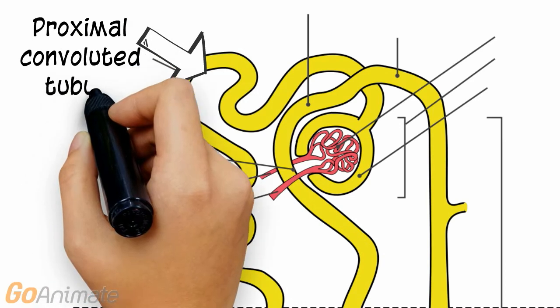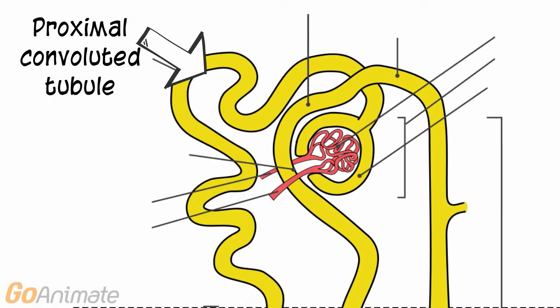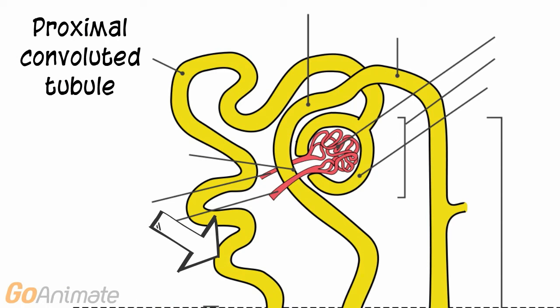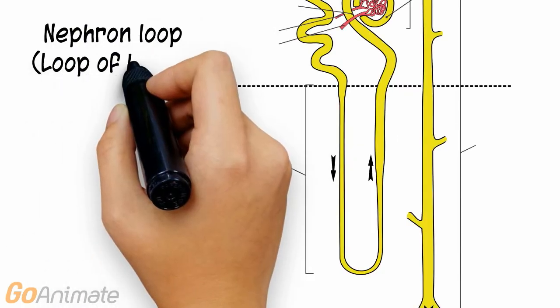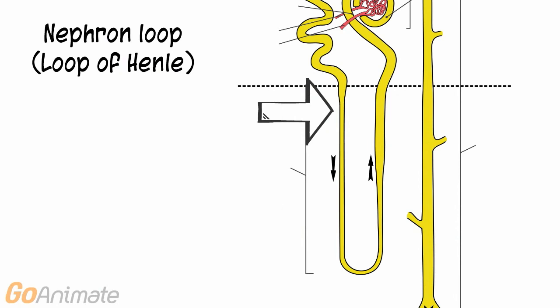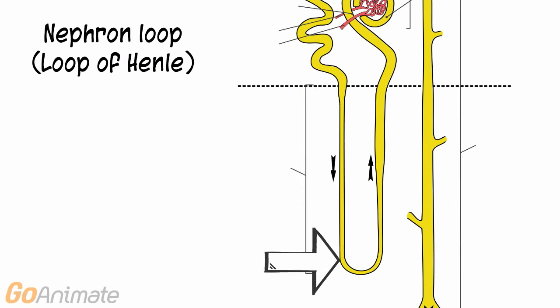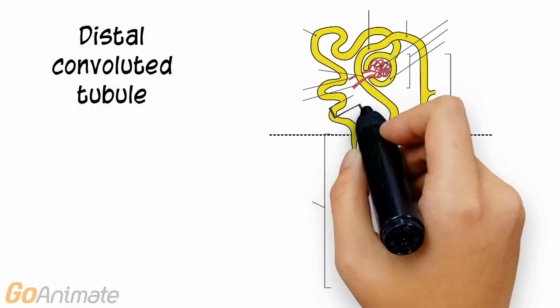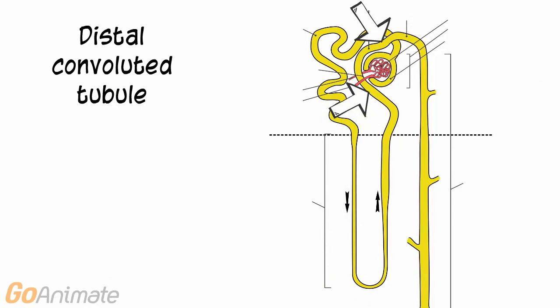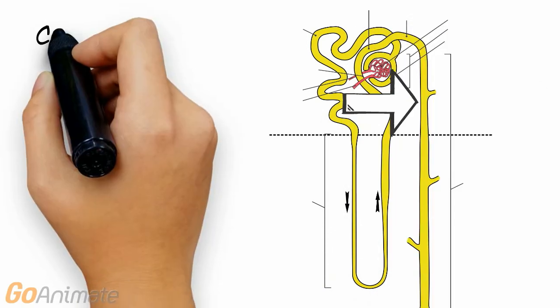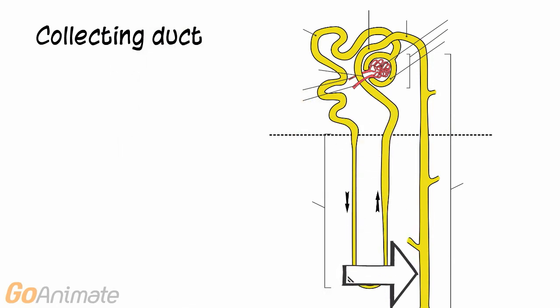The glomerulus filters the blood and the filtrate flows through the proximal convoluted tubule. Urine then flows to the nephron loop, or loop of Henle, and from there to the distal convoluted tubule. From there it flows to the collecting duct, which drains into the renal papilla.